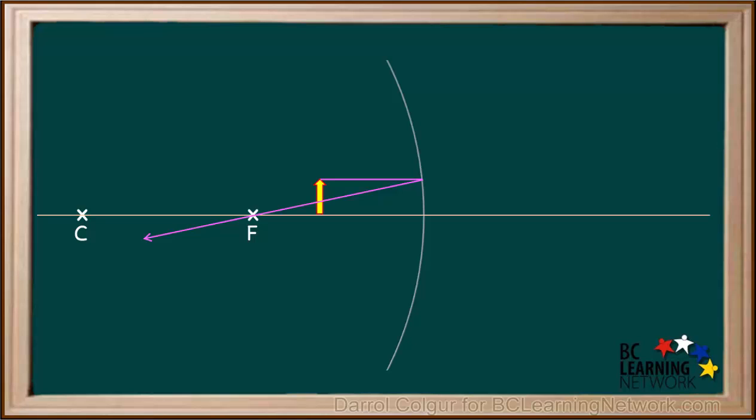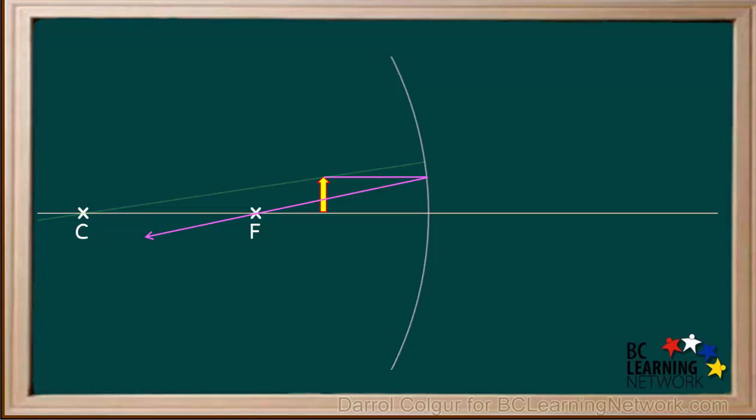The next thing we do is draw a straight line through the center of curvature, C, and the top of the object. We extend it to the surface of the mirror. A ray from the top of the object will travel along this line and strike the mirror. Because this line goes through the center of curvature, this ray will be reflected back along the very same path.